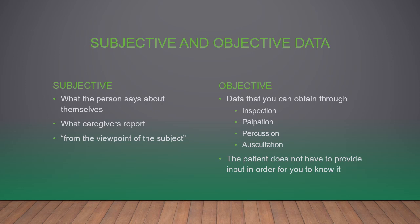Let's start by examining the difference between subjective and objective data. Subjective is what the person says about themselves or what caregivers report — data collected from the viewpoint of the subject. This includes things like pain, thirst, hunger, feeling hot, feeling cold, nausea, fatigue, joint or muscle pain, weakness, agitation, and anxiety — things that you as the examiner would not be able to label without the viewpoint of the subject.